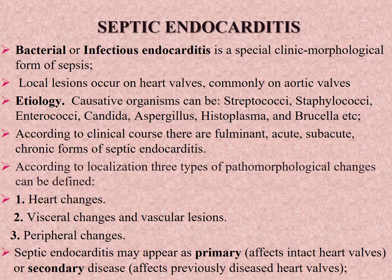Staphylococci occur in 20–30% of subacute cases and 50% of acute cases of infective endocarditis. Staphylococcus aureus and Staphylococcus epidermidis are common in patients with indwelling central venous catheters, intravenous drug abusers, diabetic patients, chronic hemodialysis, and prosthetic valve endocarditis. Staphylococcal endocarditis can affect functionally normal native valves and cause extensive tissue damage and septic emboli. Enterococci account for 5–15% of cases. Less common organisms include Candida, Aspergillus, Histoplasma, and Brucella, common in intravenous drug abusers, alcoholism, and patients with prosthetic heart valves.